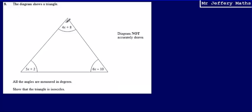This is question 8. Here I'm given a diagram of a triangle and I'm given the angles measured in degrees, but I'm given them as algebraic expressions. What I'm asked to do is show that the triangle is isosceles.